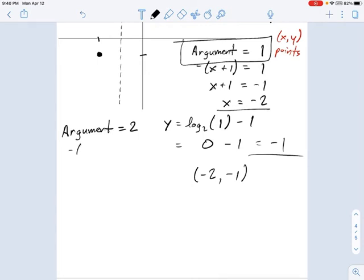So, our argument is negative x plus one. We're going to say that's equal to two. Which means x plus one equals negative two. Which means x equals negative three.